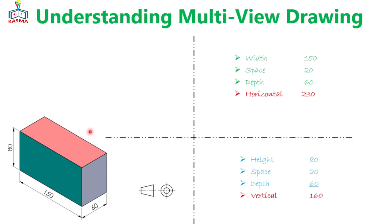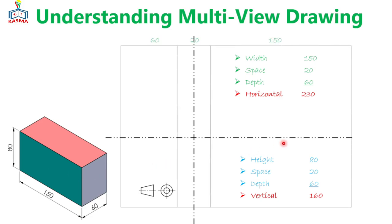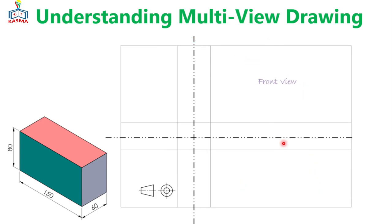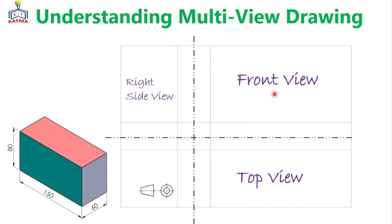If the question is asking for a first angle projection, I will show you here. Later on I will show you even with a third angle projection. The front view, the top view, and the right side view will be selected for this case. In first angle projection, the front view will be placed here, the top view will be on the bottom of that, and the right side view will be placed on the left of the front view. So the space required for the three views will be this one.